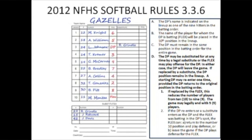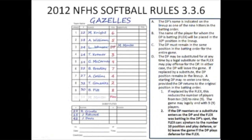In either case, the DP will leave the game. If replaced by a substitute, the DP position remains in the lineup. A starting DP may re-enter one time, provided the DP returns to the original position in the batting order. If replaced by the flex, this reduces the number of players from 10 to 9. The game may legally end with 9 players. If the DP re-enters, or a substitute enters as the DP, and the flex is batting in the DP's spot, the flex can either: A) return to the number 10 position and play defense, or B) leave the game if the DP plays defense for the flex.